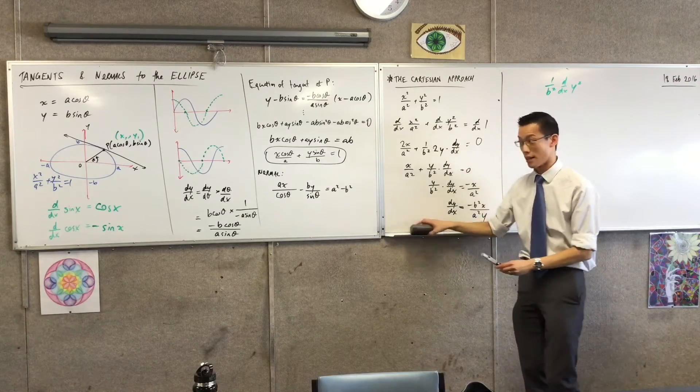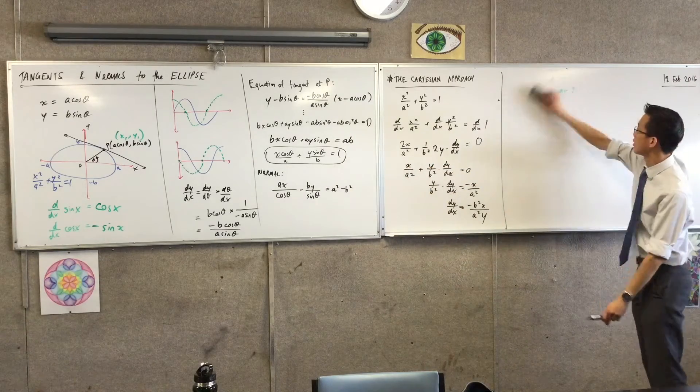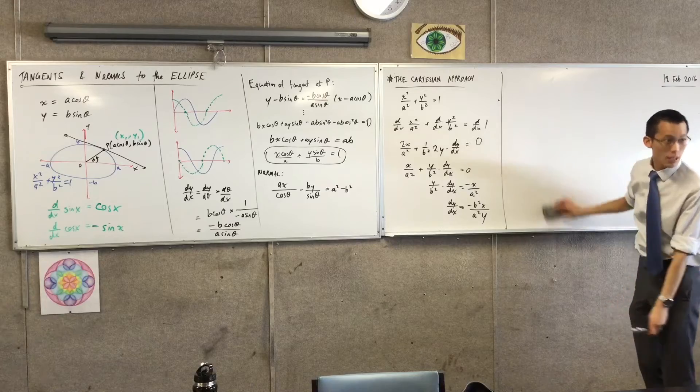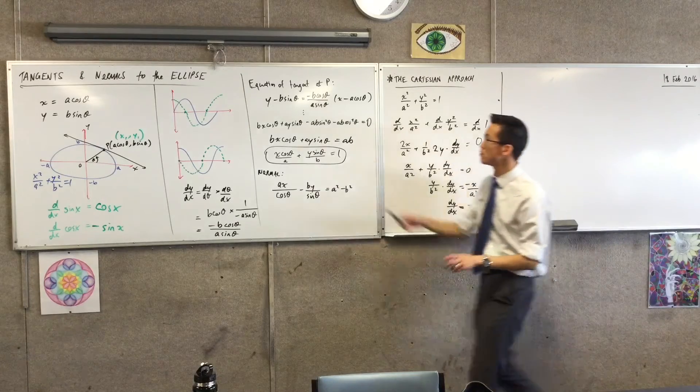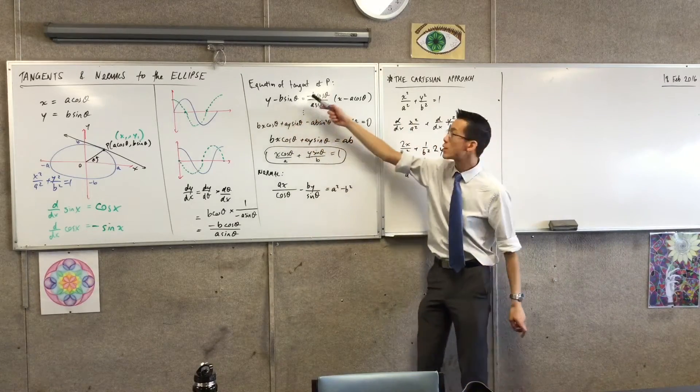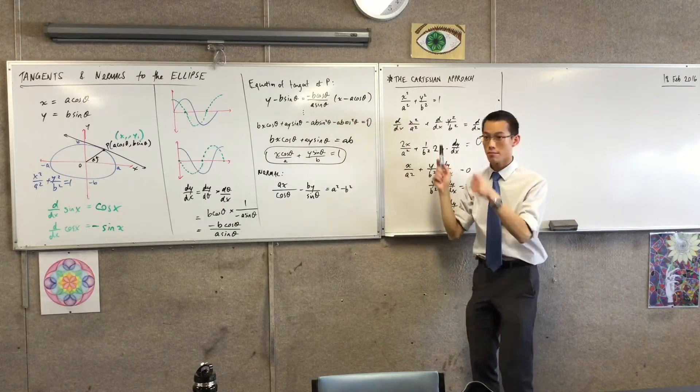So now we have the derivative. I'll ask the same question I did back there. What was the point of that? I'm going to put this into y minus y₁ equals m times x minus x₁.